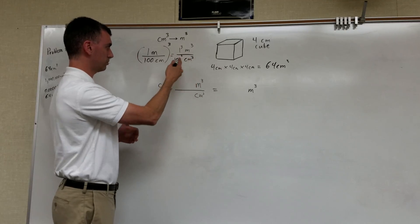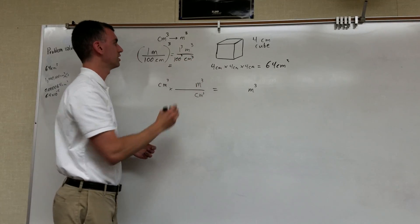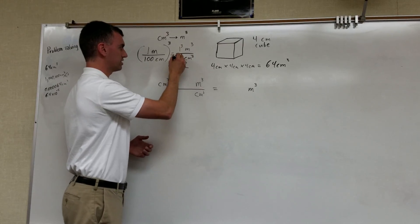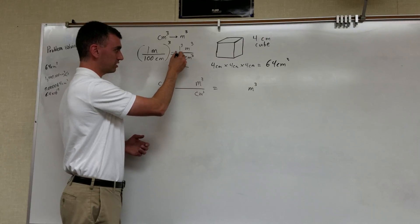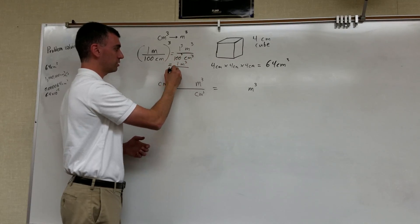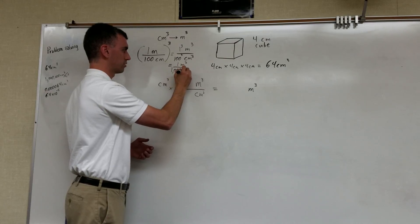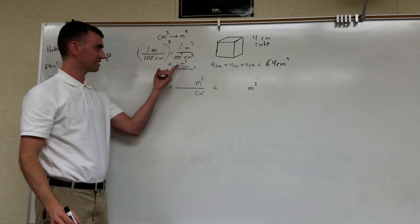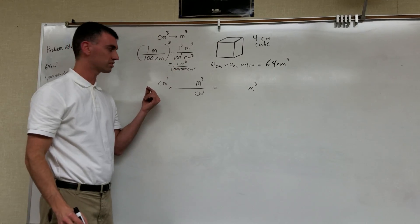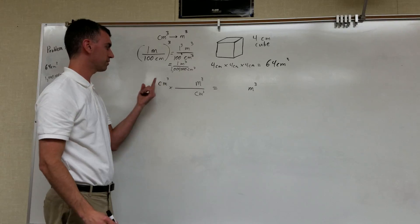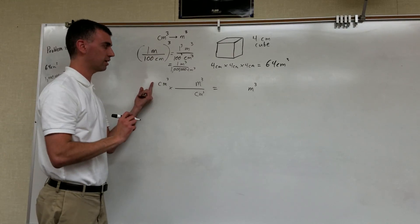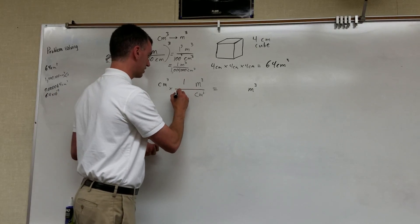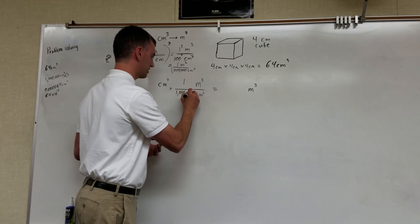Now we've got the right units. In another form: 1 cubic meter equals 100 cubed centimeters cubed. 100 cubed is 1 million, so 1 cubic meter is 1 million cubic centimeters. Now I've got the relationship necessary to convert from cubic centimeters to cubic meters.